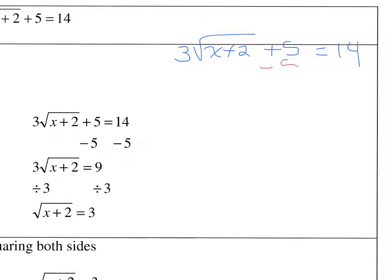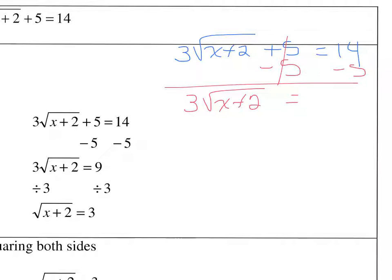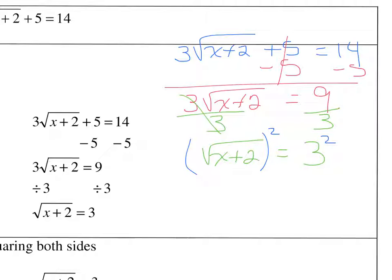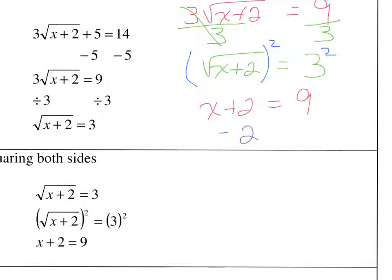We get rid of the plus 5 by subtracting 5 from both sides, leaving 3 times the square root of x plus 2 equals 9. Then we divide both sides by 3 to get the square root of x plus 2 equals 3. Now we've isolated the radical, so we square both sides. The radical and square cancel, leaving x plus 2 equals 9. Subtracting 2 from both sides gives us x equals 7.